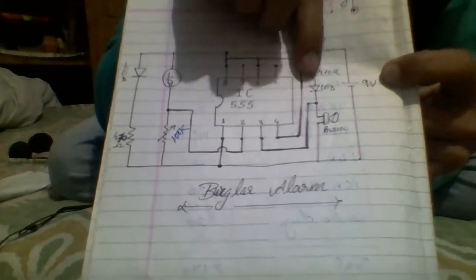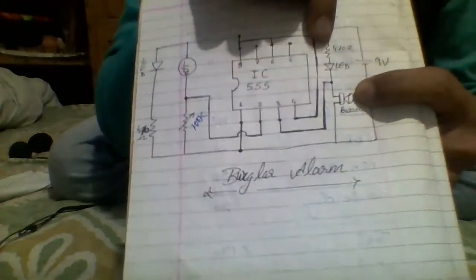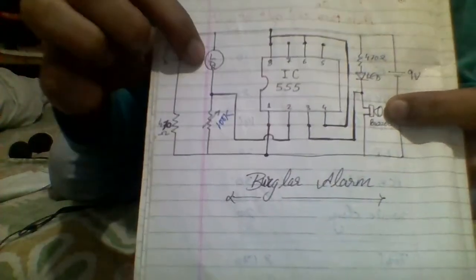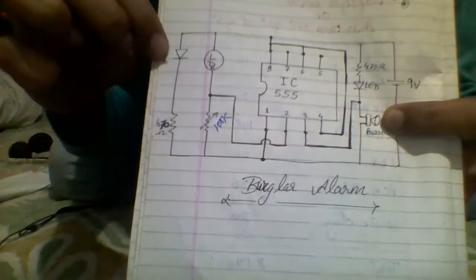Look at here, it's LED, buzzer, resistor, variable resistor of 100K, LDR, again a resistor and LED.